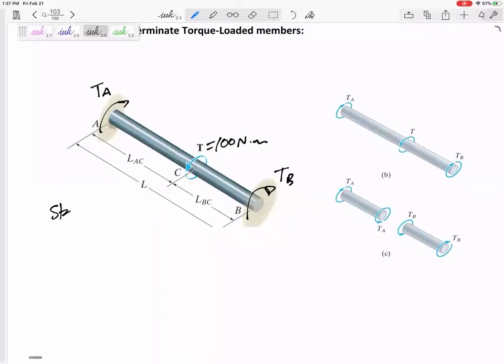And so from statics, and just from looking at it, really from summing the moments equal to zero, do you see that the TA plus the TB are going to add up to 100? But I don't know if it's 50-50, is it 60-40? Statics doesn't give us enough information.